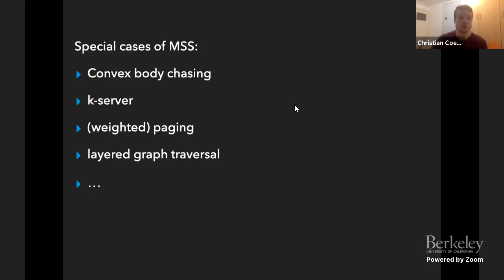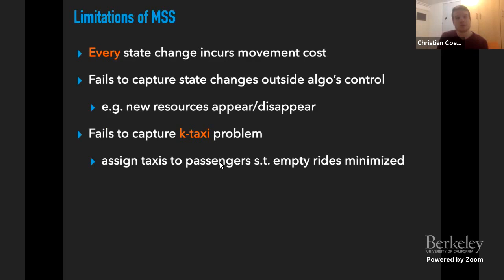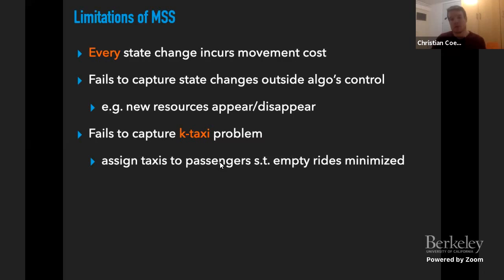This is a very general online problem and loads of problems fall into this class of Metrical Service Systems. However, there are still limitations to this class. For instance, it's not possible to change the state of the algorithm without incurring cost. Resources could appear or disappear that change the state without us wanting to charge cost. Something like this could not be captured by Metrical Service Systems. A particular problem that doesn't fall into this class is the k-Taxi problem, which is a generalization of the k-Server problem. The task is to assign taxis to passengers so as to minimize the distance of empty rides.